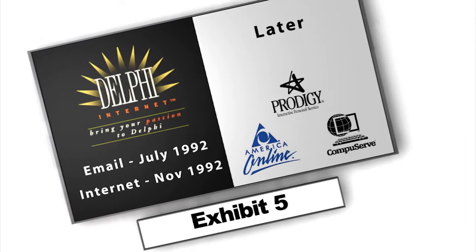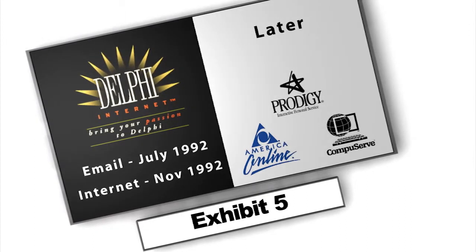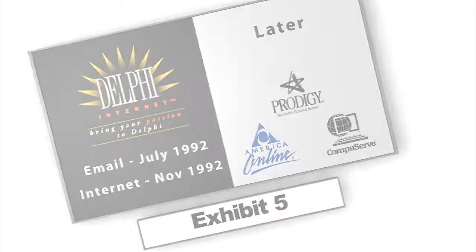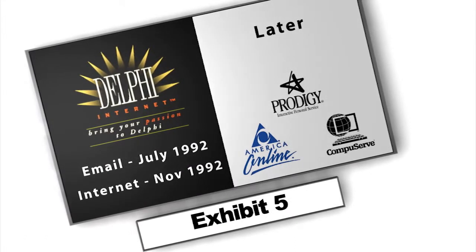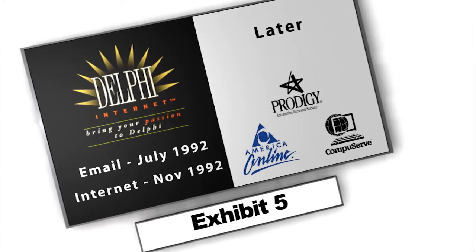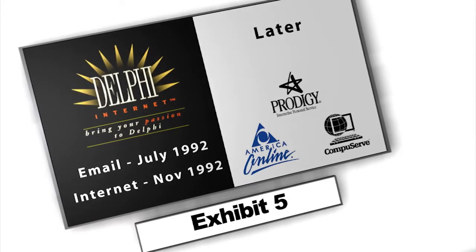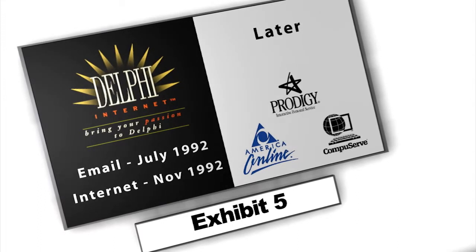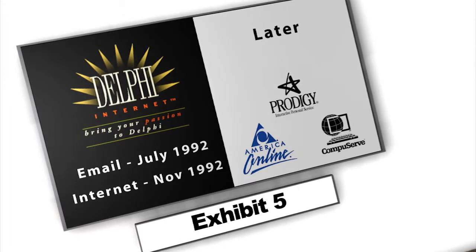In 1991, the first really friendly interface of the Internet was developed at the University of Minnesota. Delphi was the first national commercial online service to offer Internet access to its subscribers. It opened up an email connection in July 1992 and full Internet service in November 1992. All limitations on commercial use disappeared in May 1995 when the National Science Foundation ended its sponsorship of the Internet backbone and all traffic relied on commercial networks.